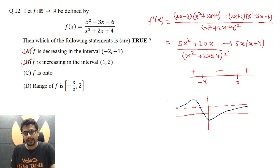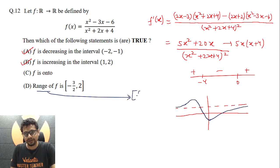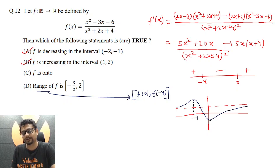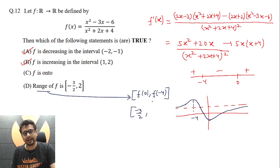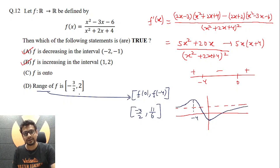The range of f is determined by the minimum value at x equals 0 and the maximum value at x equals minus 4, since the derivative is zero at both those points. Putting x equals 0 gives f(0) equals minus 6 over 4, which is minus 3/2. Putting x equals minus 4 gives f(minus 4) equals 11/6. So the range is [minus 3/2, 11/6], not [minus 3/2, 2], meaning option D is not correct.